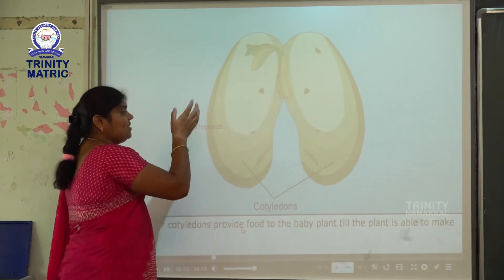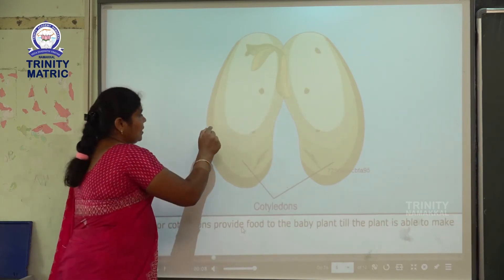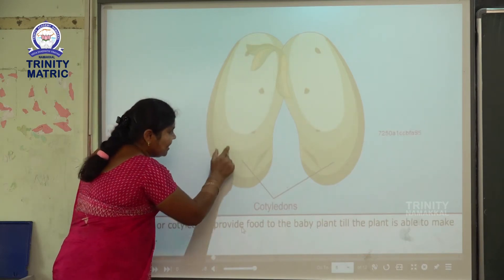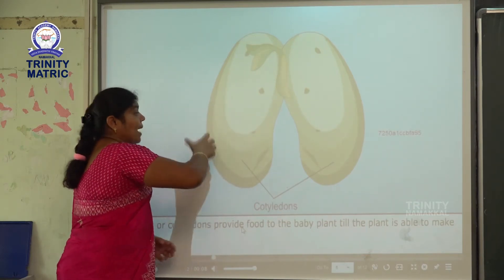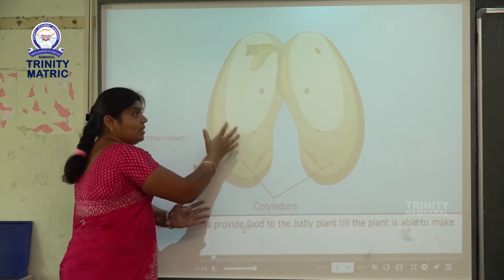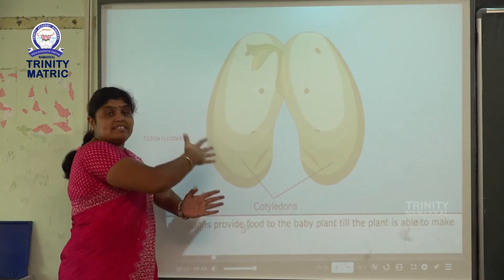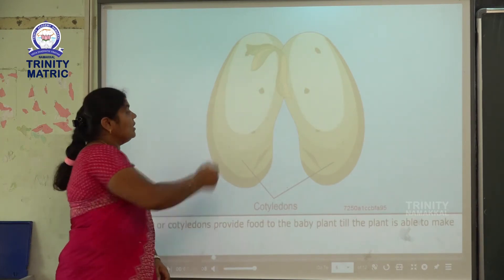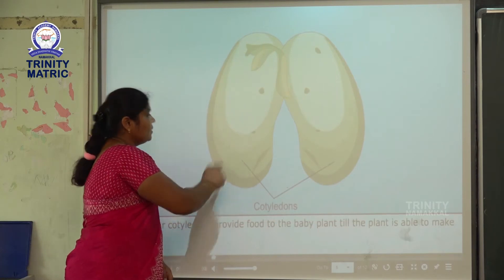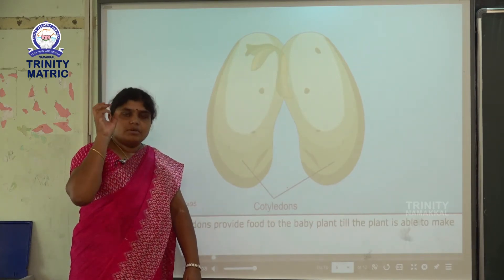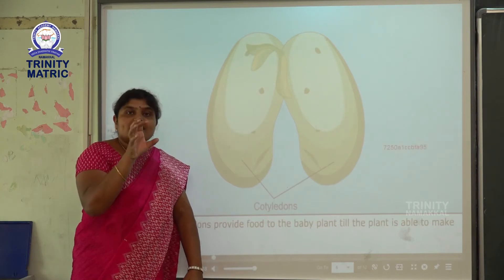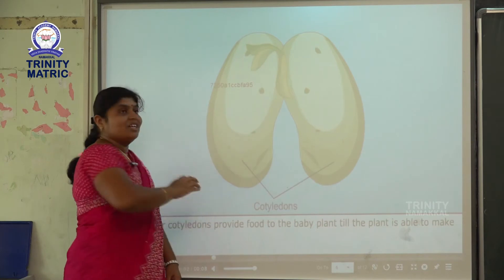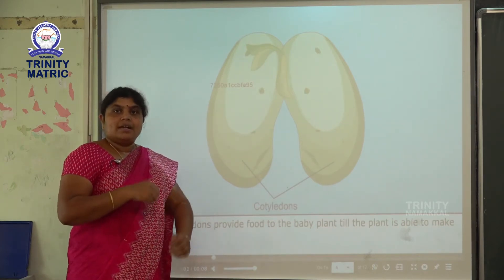The second part is endosperm. The endosperm is a main part of the seed. What is the function of endosperm? The endosperm is here — see, the endosperm is the maximum part of the seed. The endosperm gives food to the plant and stores the food.